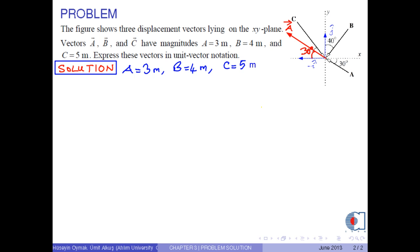Vector a can be slided parallel to itself so that its tail sits at the origin. Here, minus i hat represents the unit vector in the negative x direction and j hat represents the unit vector in the positive y direction. Therefore, vector a becomes a times cosine 30 degrees minus i hat plus a times sine 30 degrees j hat.